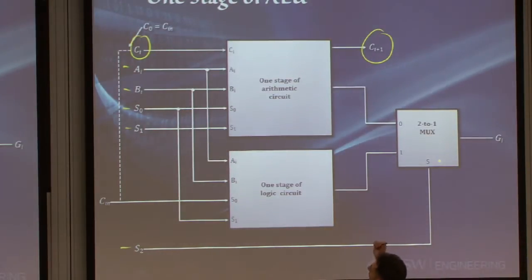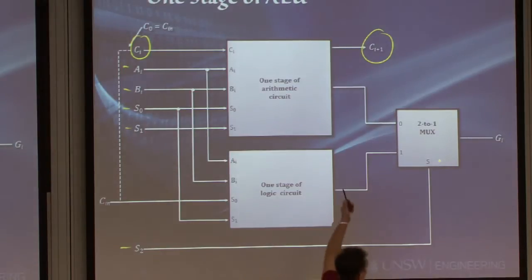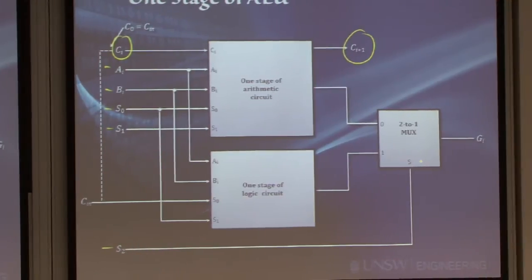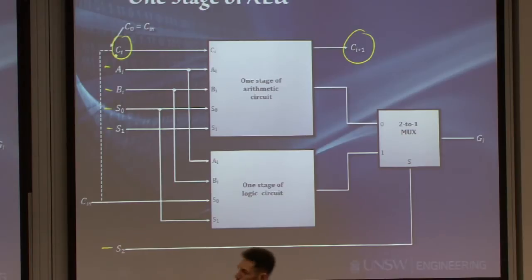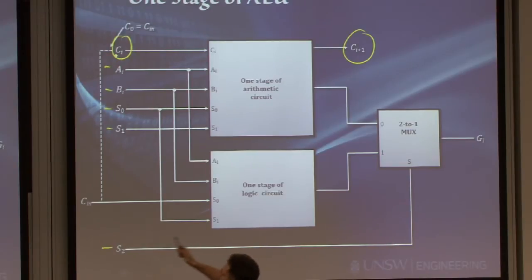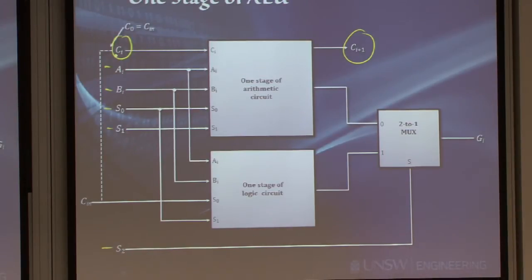In both cases, both circuits will be active at the same time. We will get results from both, but the one we're interested in is selected using S2. In the first stage of our ALU, the dashed lines indicate that we connect the CI input to the overall carry-in coming from the outside. You have to distinguish between the overall CI coming into the ALU and the internal CI which is connected to the carry-out from the previous stage.